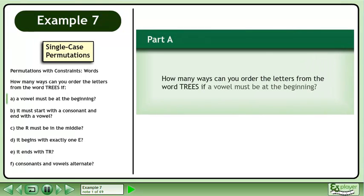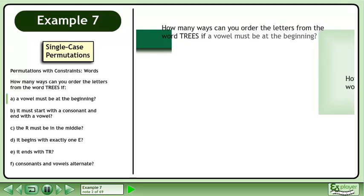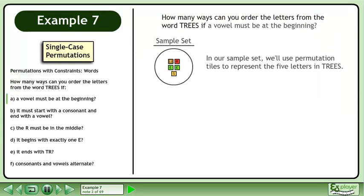In this example, we will solve permutations with constraints involving words. How many ways can you order the letters from the word TREES if a vowel must be at the beginning? In our sample set, we'll use permutation tiles to represent the five letters in TREES.